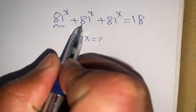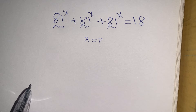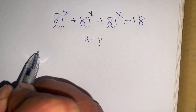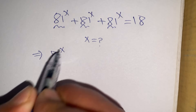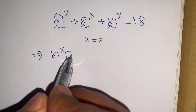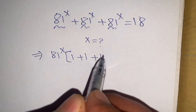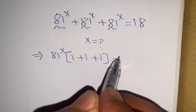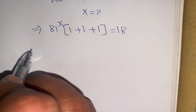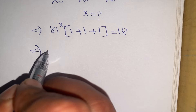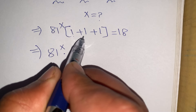On the left hand side, there is 81 to the power x in each term. We can factor out 81 to the power x, leaving 1 plus 1 plus 1 inside the bracket, multiplied by 81 to the power x, equal to 18.